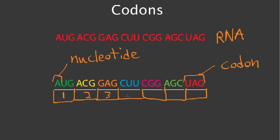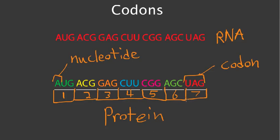What happens is all the codons put together code for a protein. All of the amino acids put together create a protein. And here, this is amino acid number 7. Each codon codes for an amino acid.